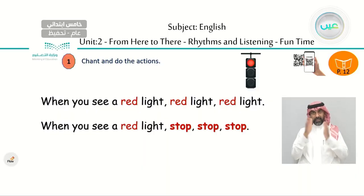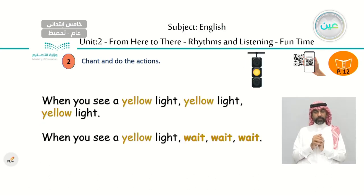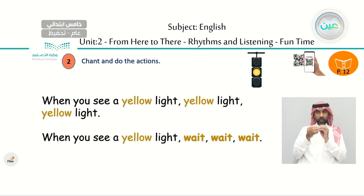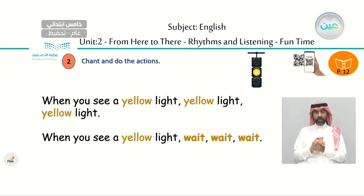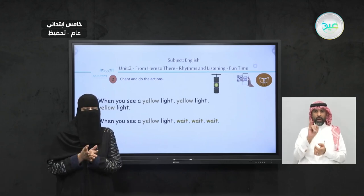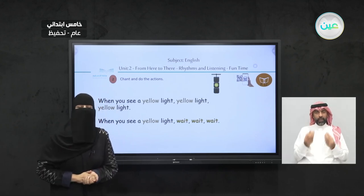Let's go to the next color. What color is it here? Yellow. That's good. Listen: when you see a yellow light, yellow light, yellow light. When you see a yellow light, wait, wait, wait. So what should you do when you see a yellow light? Wait, wait, wait. That's good, excellent.